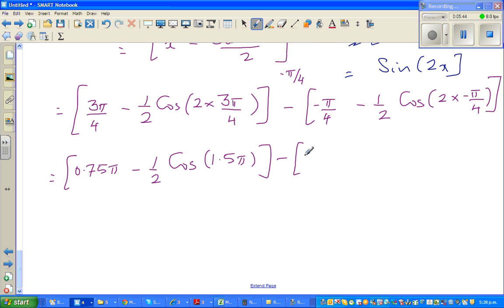Minus pi by 4 can be written as minus 0.25 pi minus half times cos of, this is half, so that is minus 0.5 pi.